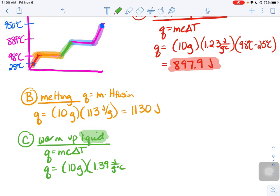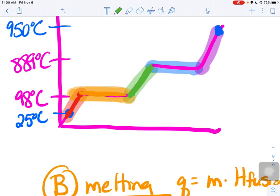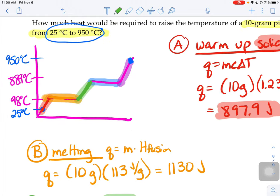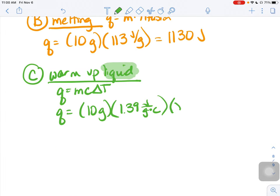Now I need the delta T. Be careful, the delta T is not from 25 degrees to 950. We're focusing on just the green part of the graph. And the green part of the graph starts at 98 degrees, right? It starts right here, and then it ends right here. So we're focusing on just this little chunk right here, 98 to 889. So those are the temperatures I'm going to use, 98 to 889. It ends at 889. It started at 98. So that little piece would take 10,994.9 joules.